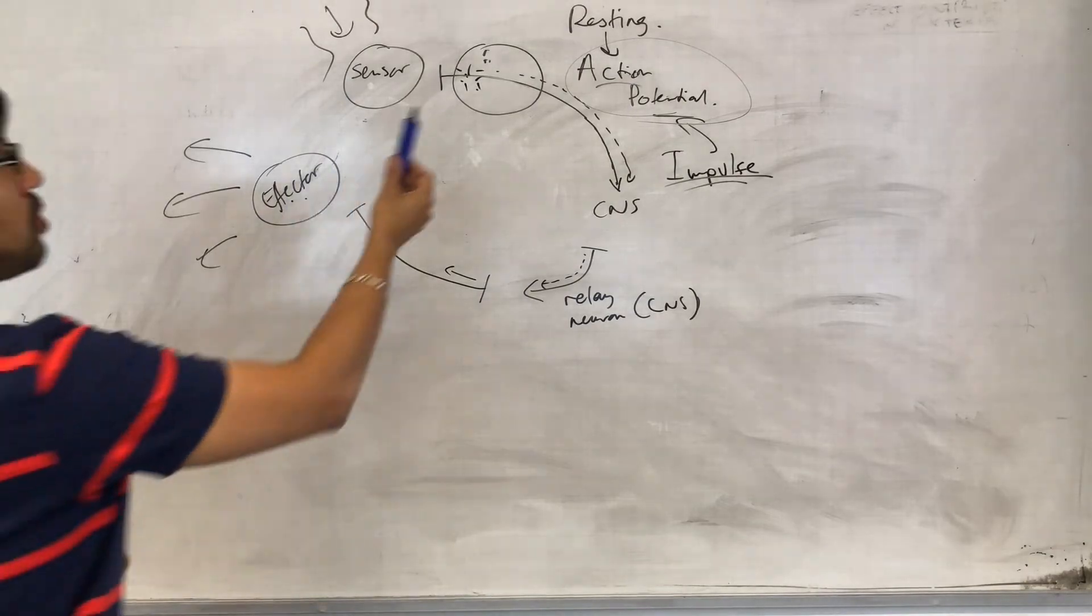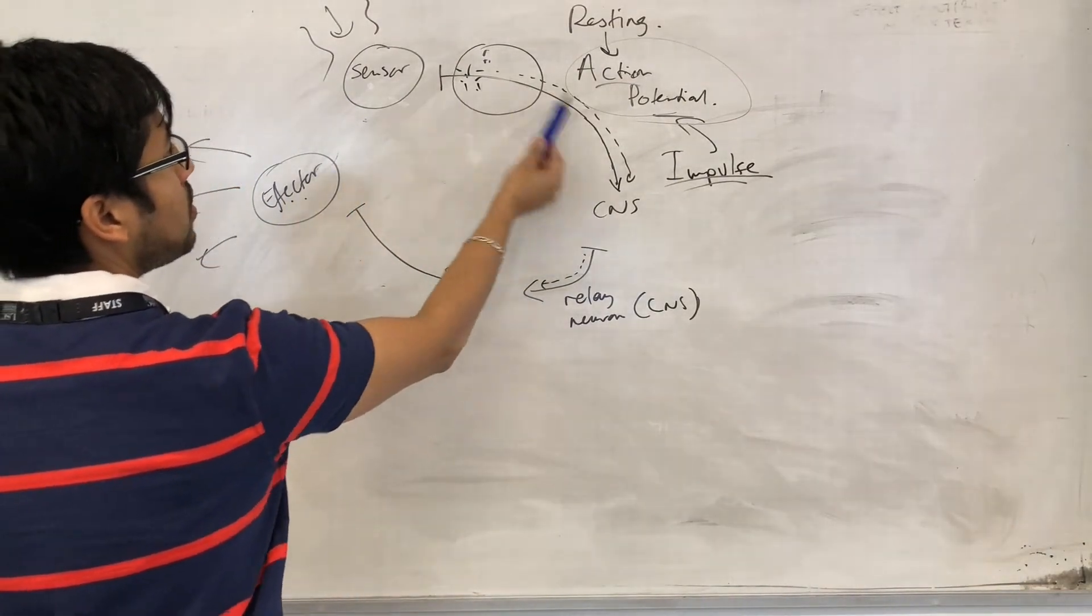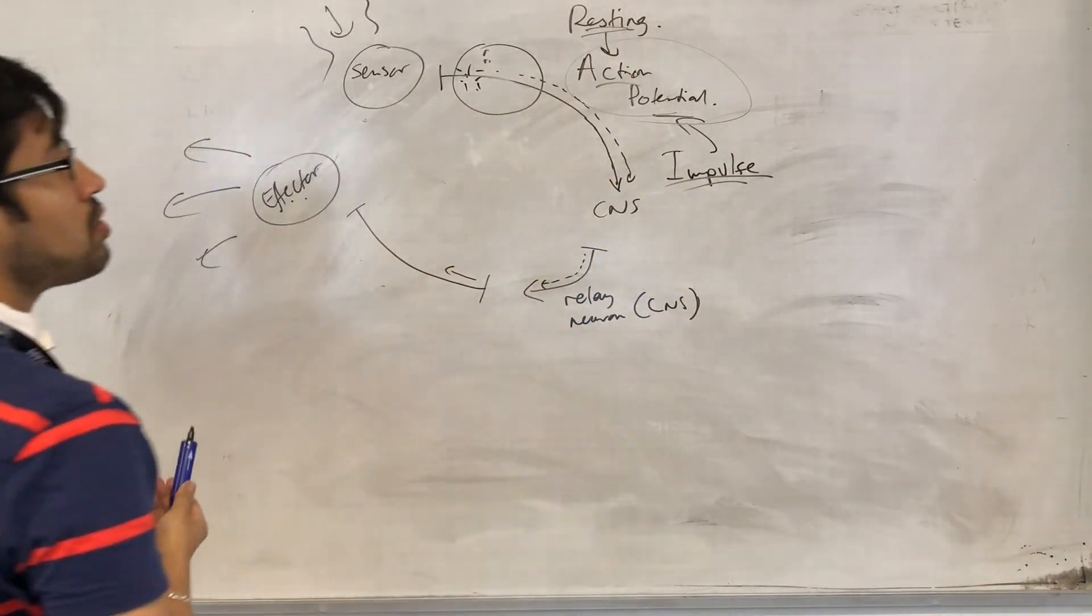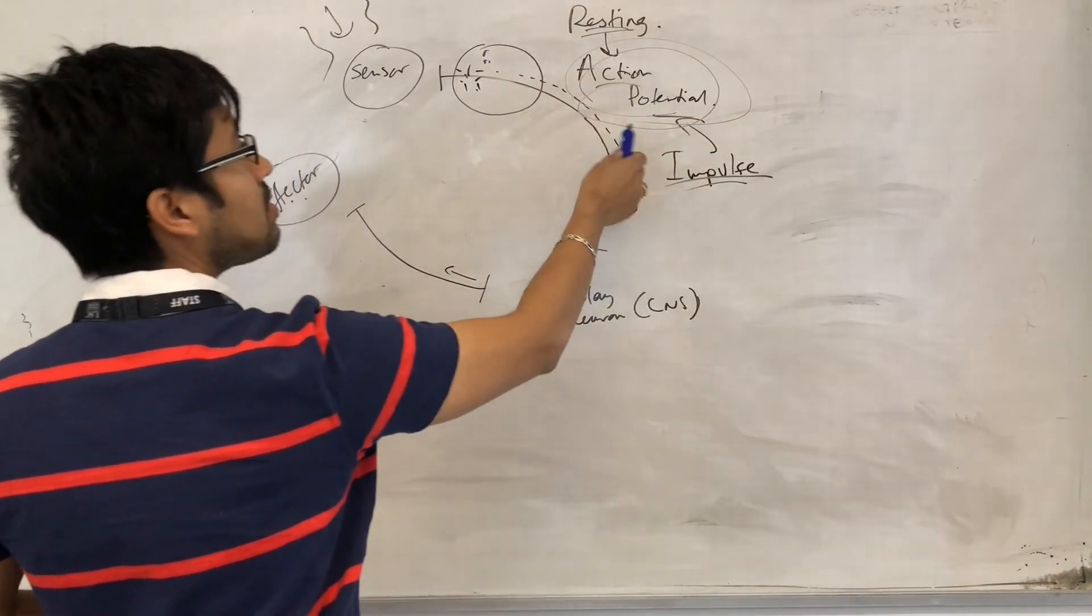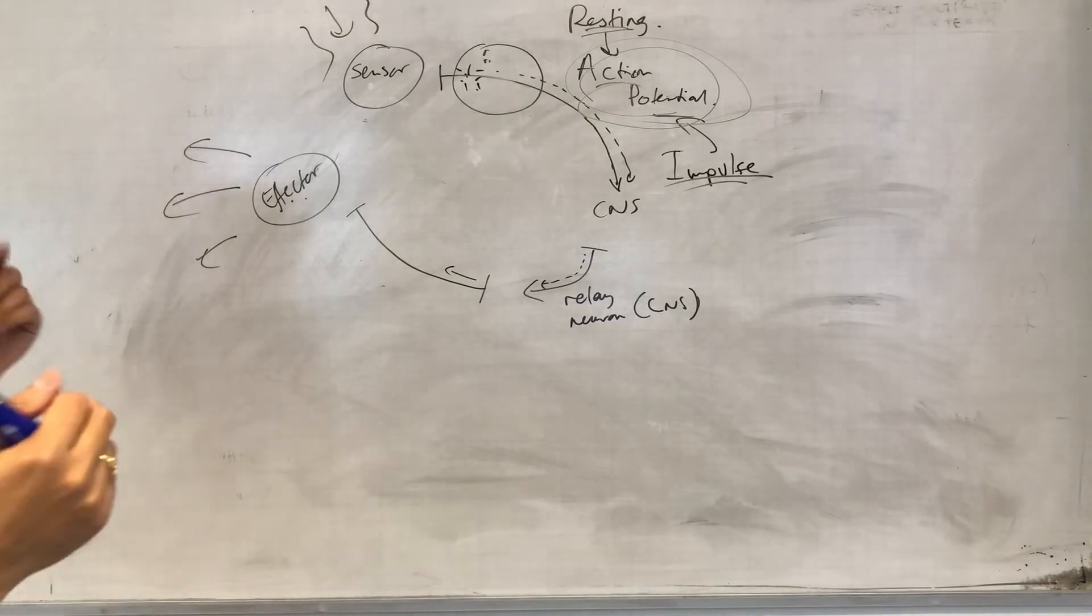So we're going to look at neurons. We're going to look at what is happening in a neuron when at rest, and then we'll start to look at what changes during an action potential that makes the signal. We'll look at how that signal moves.